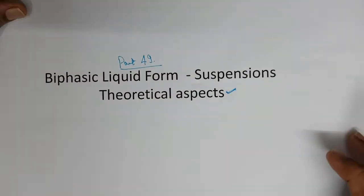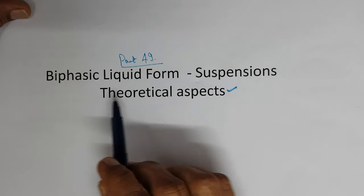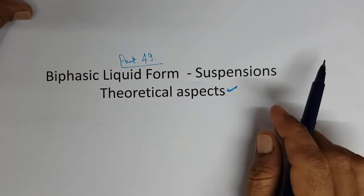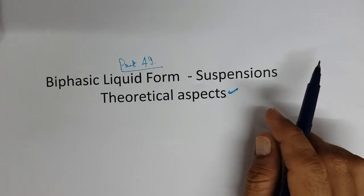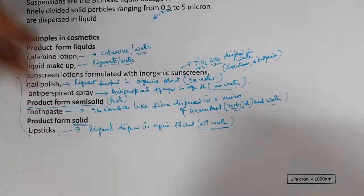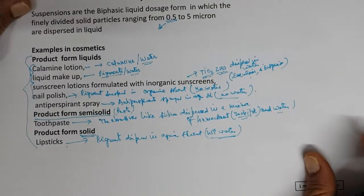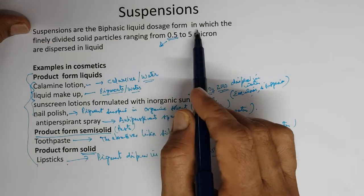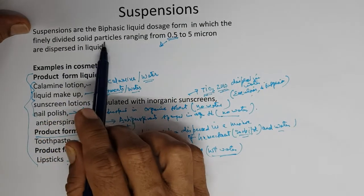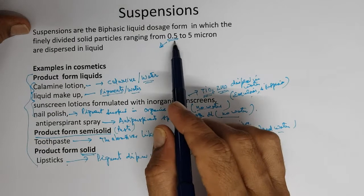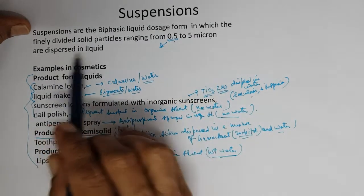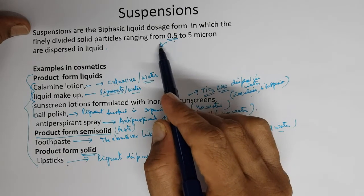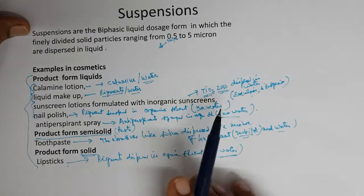Part 49 today will be the biphasic liquid dosage form: suspensions. We will see some of the theoretical aspects. A suspension is a biphasic liquid dosage form in which finely divided solid particles ranging from 0.5 to 5 microns are dispersed in liquid. With modern technology, the particle size can go less than 0.5 microns also.